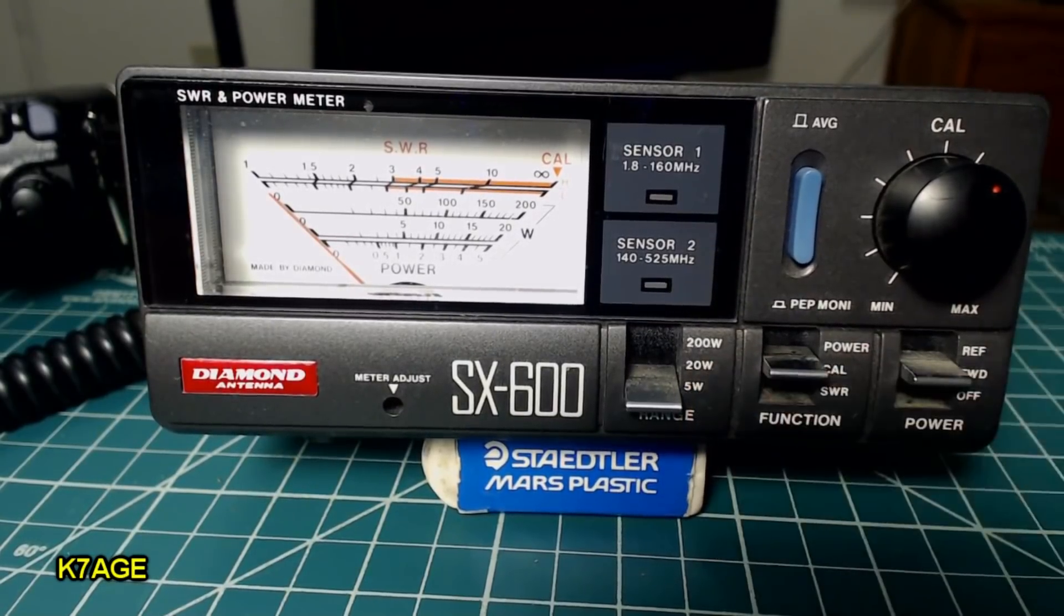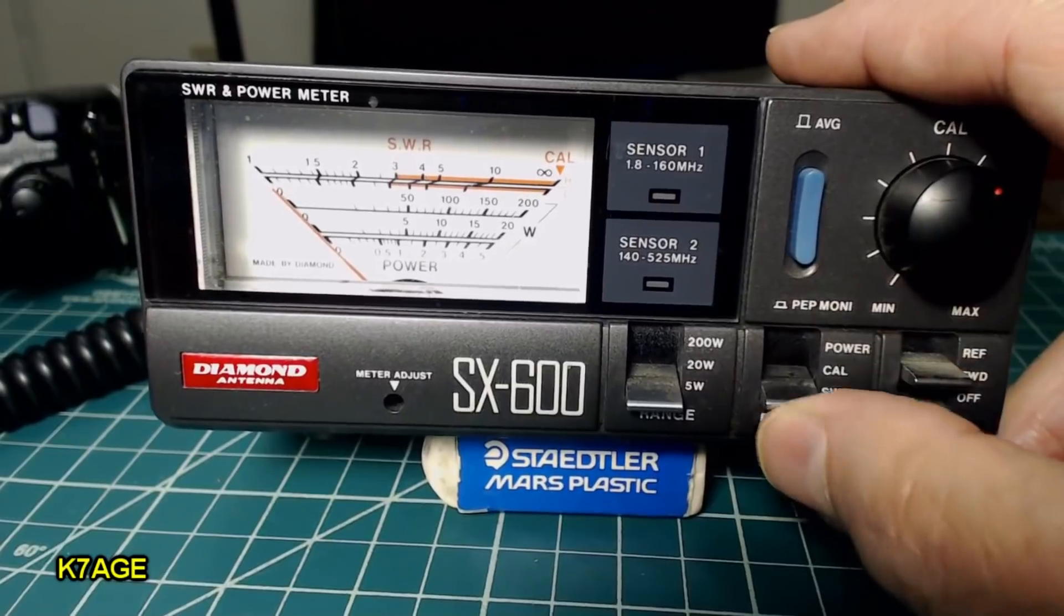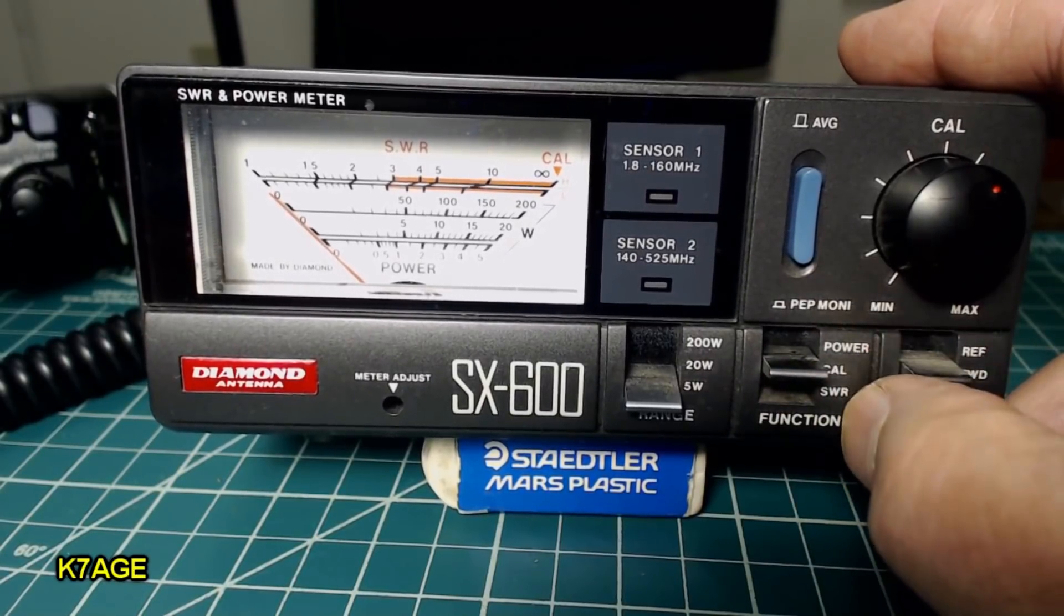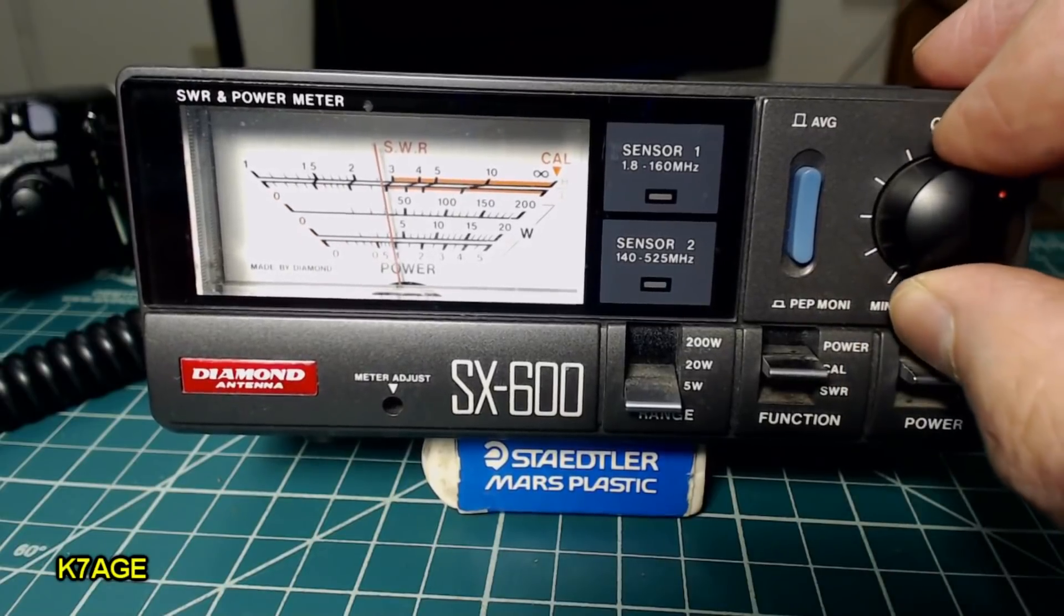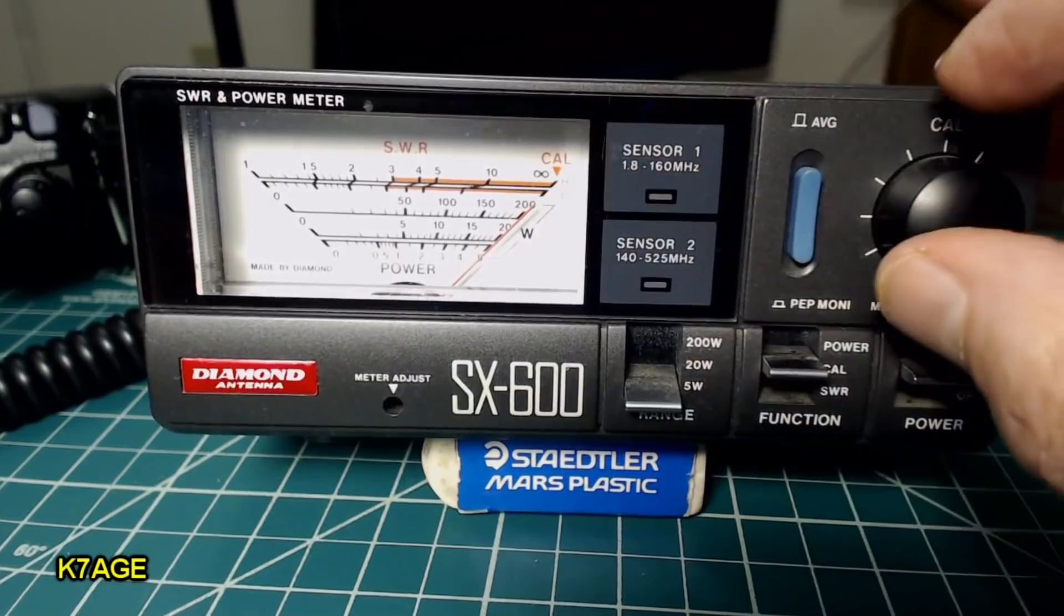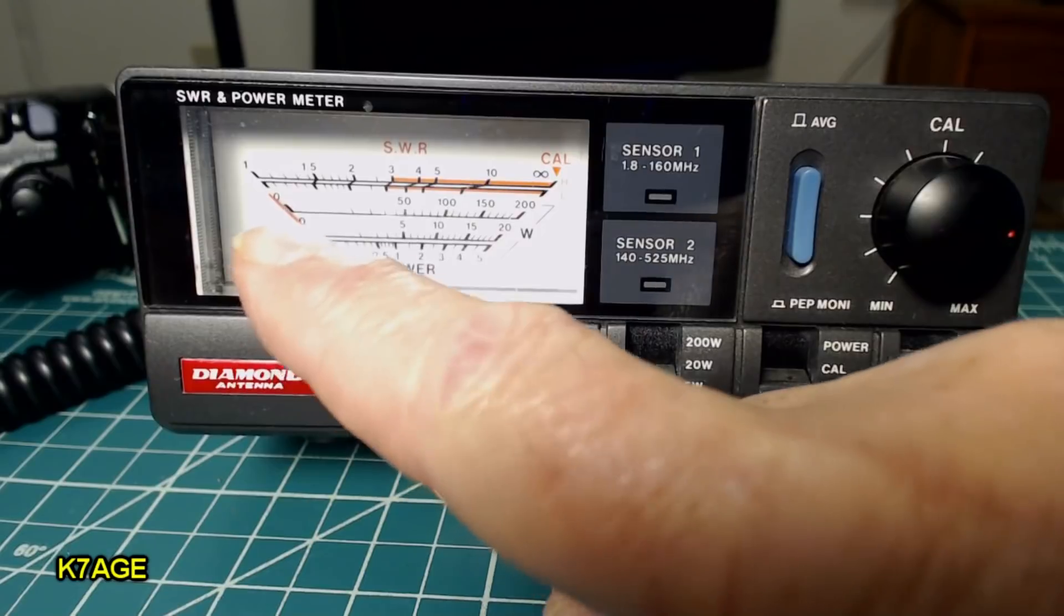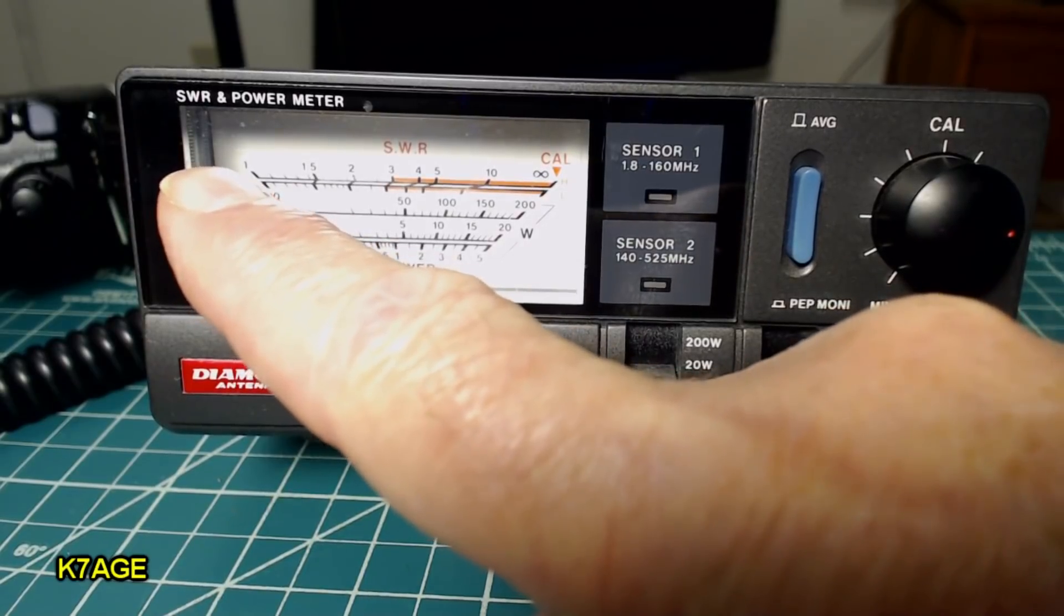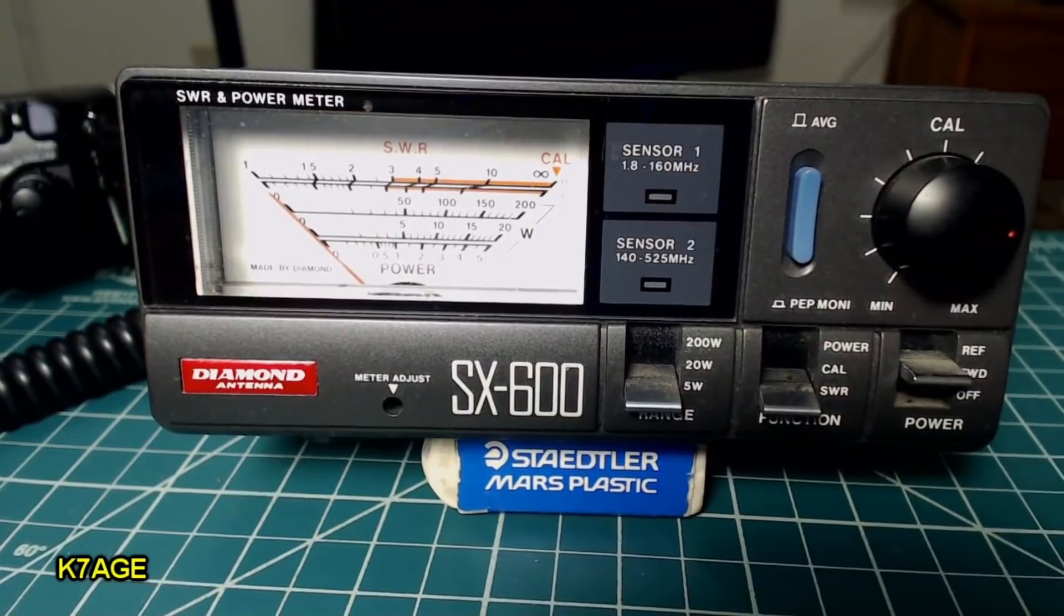Anyway, to do an SWR measurement I have my 50 ohm load connected to the back of the meter here and the first thing you do is you put it in the CAL position and you adjust the knob here. You adjust that for full scale and then go to SWR. You can see the meter isn't moving so my SWR is 1 to 1. So that's what I would expect with a good termination and a good meter.